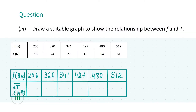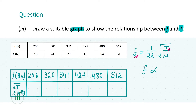Moving on to part three, we're asked to draw a suitable graph to show the relationship between frequency and tension. Using this formula, you can clearly see that frequency f is directly proportional to the square root of tension T. This can also translate into f² being directly proportional to T, and you can plot a graph of either √T values or f² values.